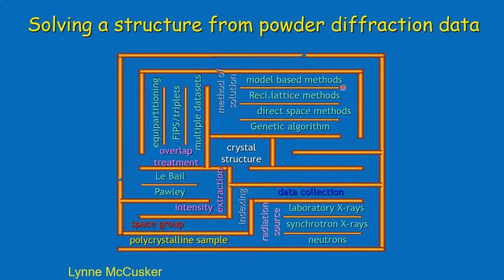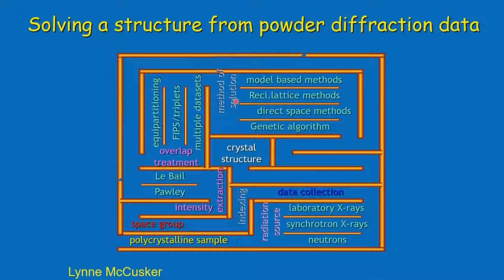Then we use the method of structure determination: model-based methods, reciprocal lattice methods such as Patterson and direct methods, and direct space methods including Monte Carlo simulation, simulated annealing, and genetic algorithm. Using any of these we solve the structure. Having solved the structure, we have to do a whole profile refinement — the whole profile has to be refined. This is very, very important.